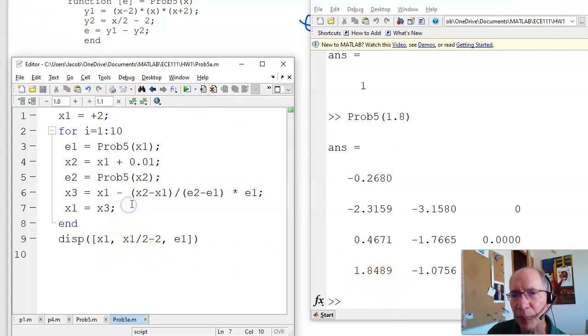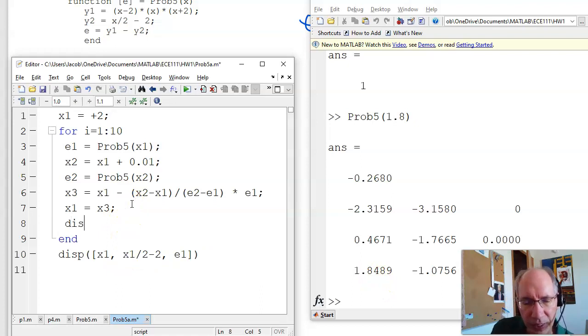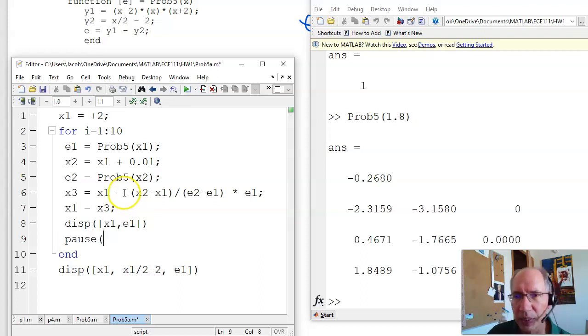And if you want to see what's happening, I could go into here. This slows it down. This is going to be display x1, e1. And let's have it wait one second each iteration.